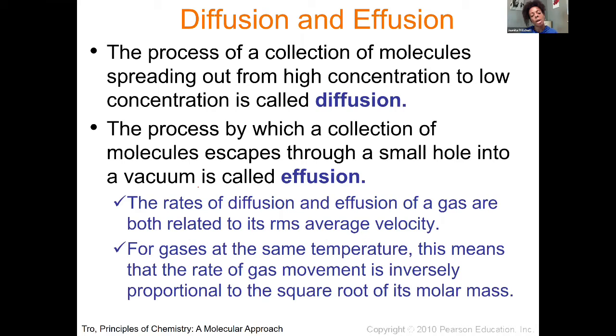Another process that can occur is that we're collecting these molecules as they escape through a small hole into a vacuum. That process is known as effusion. Now the rates of effusion and diffusion are going to be related to the average velocity that is associated with that molecule. For gases at the same temperature, this means that the rate of gas movement is inversely proportional to the square root of its molar mass. You can actually calculate how fast things would effuse if you have information about the molar mass of the substance that you're studying.